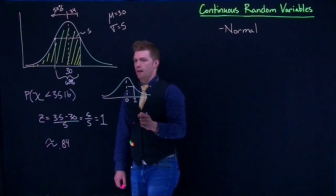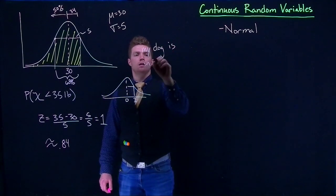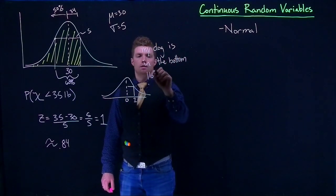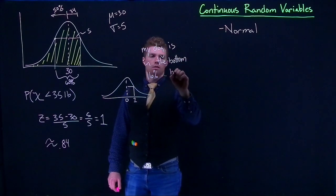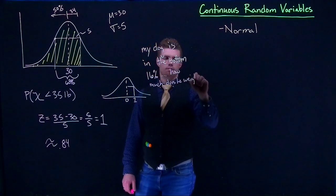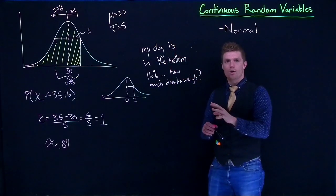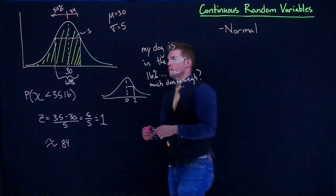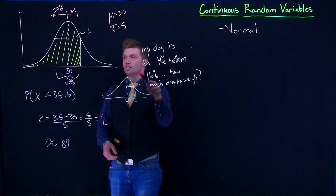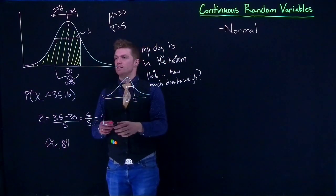Now let's say that my dog is in the bottom 16%. How much does he weigh? We can ask this question too. This question kind of goes at this scenario backwards. The first one we're asked, what's the probability that we get a dog this small? And this one is like, my dog falls in this bottom 16%. Where is he on this entire path?